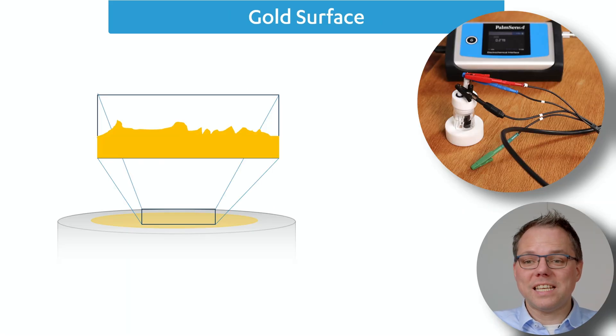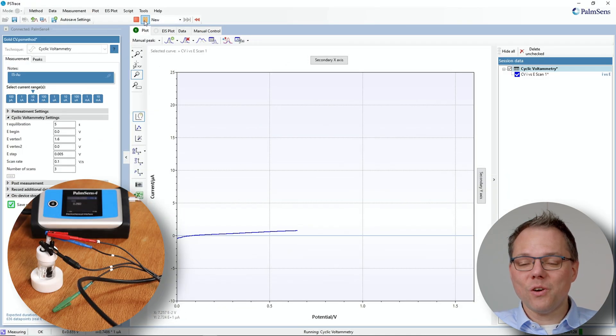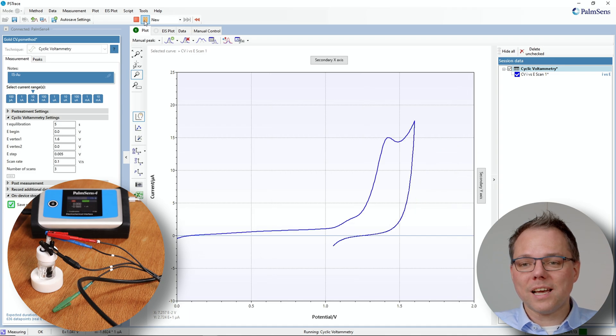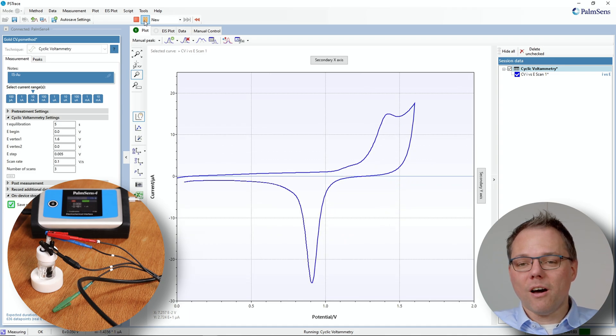Another possible application is the investigation of gold surfaces. We can make a CV of our gold surface and while we're moving towards oxidizing potentials we are oxidizing the gold surface, but only the top layer.